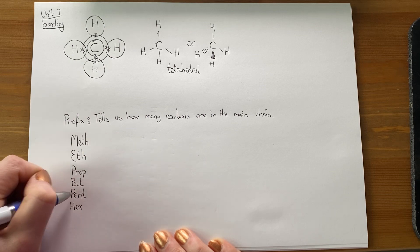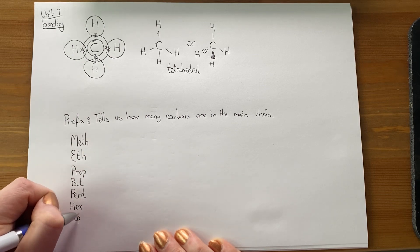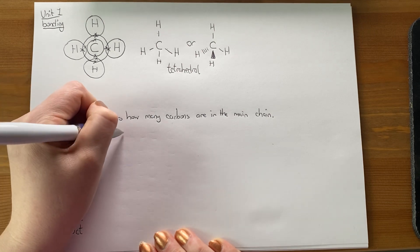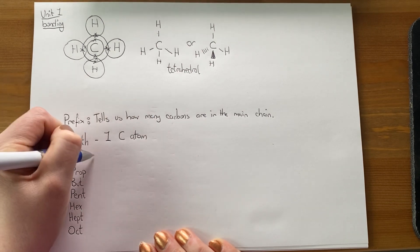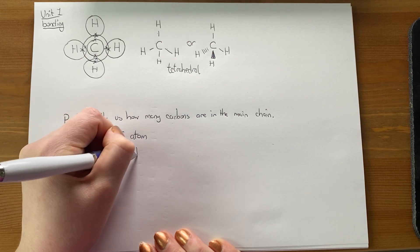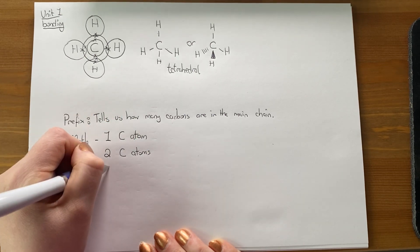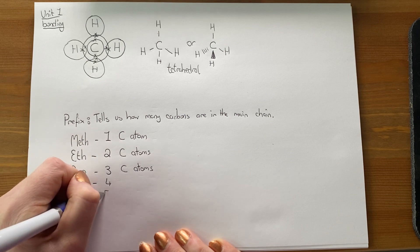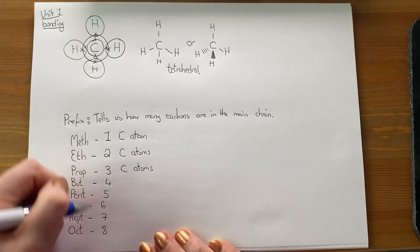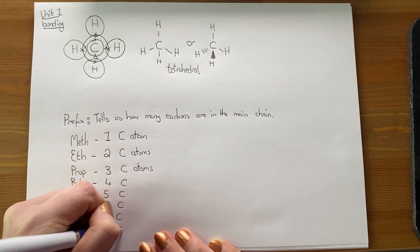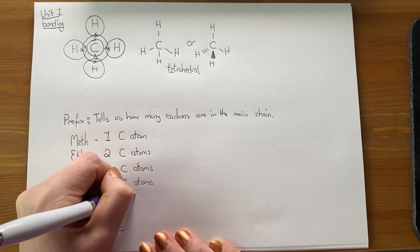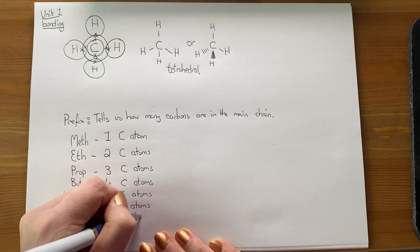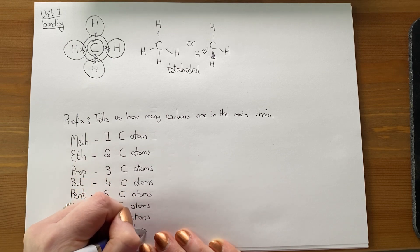'Hex' — like hexagon, 'hept' for seven, and 'oct' for eight — like an octagon. So 'meth' means one carbon atom, 'eth' means two carbon atoms, 'prop' is three carbon atoms, all the way down to eight. We'll add all of this in so we have a complete diagram. These prefixes tell us how many carbon atoms we have in the main chain of our carbon-based molecule.